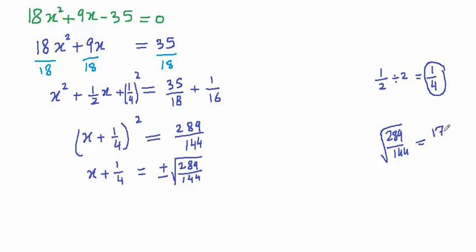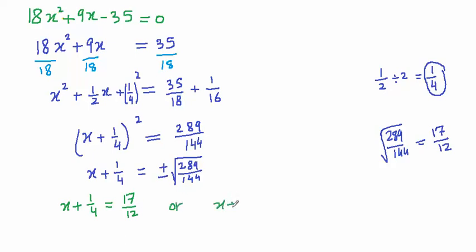Since 289 and 144 are both perfect squares — 289 = 17² and 144 = 12² — the square root simplifies to 17/12. This gives two cases: x + 1/4 = +17/12, or x + 1/4 = -17/12.